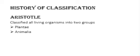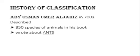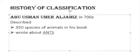First, we will have some information about Aristotle. Aristotle was a Greek philosopher and he classified organisms into two groups: Plantae and Animalia. He is considered the first scientist who classified organisms into two major groups.